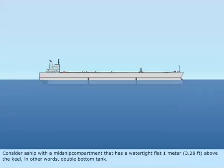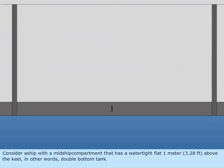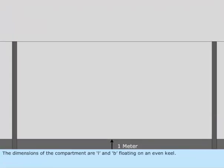Consider a ship with a midship compartment that has a watertight flat 1 meter above the keel, in other words, a double bottom tank. The dimensions of the compartment are L and B, floating on an even keel.